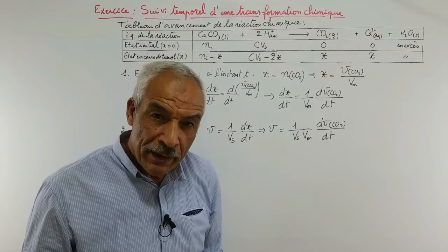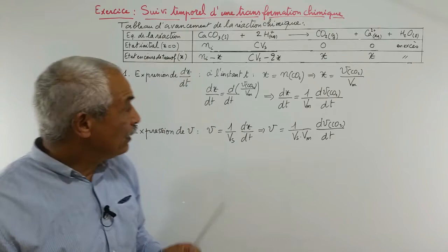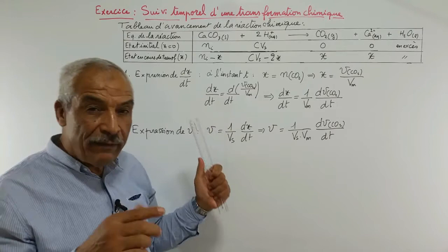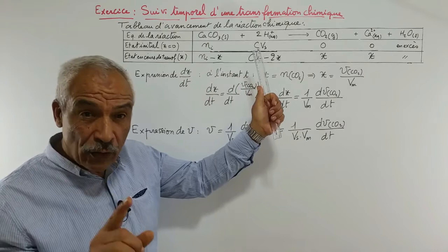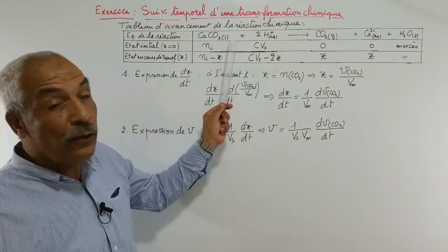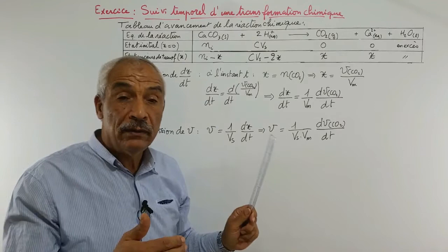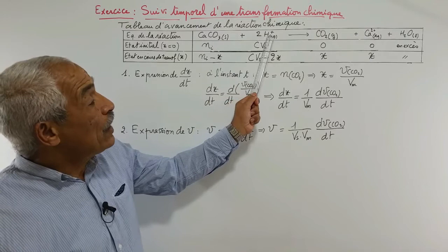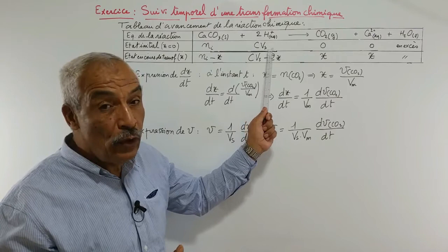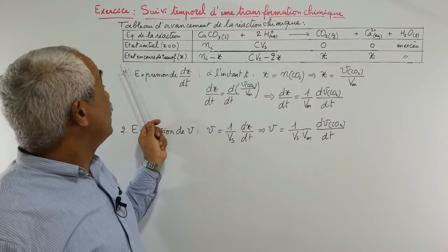Dans la première façon d'étudier le suivi, nous allons procéder par mesure du volume du gaz CO2 formé, et nous devons établir le tableau d'avancement de cette réaction. Dans la première ligne, on a l'équation chimique — c'est une réaction totale. À l'état initial, on a Ni pour CaCO3, C×VS pour H+, et zéro pour CO2. Pour Ca2+, c'est aussi zéro initialement, et l'eau est le solvant en excès.